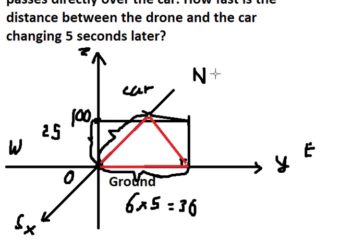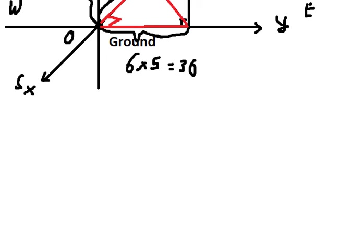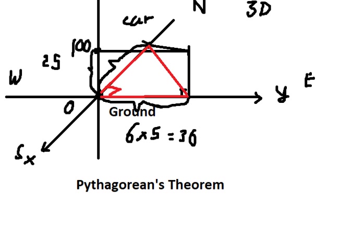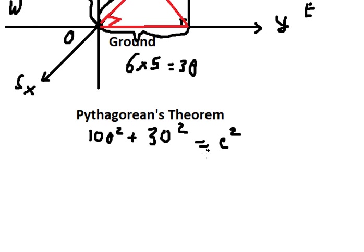So we can find the red triangle, and we have the right angle here. Be careful — this is about 3D, not 2D. We have 100 and we have 30, so we can find the hypotenuse using the Pythagorean theorem. We have 100 squared plus 30 squared equals c squared.